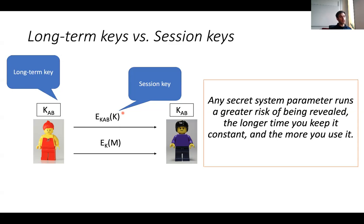This is true both because a constant key gives a higher chance the adversary might break into your machine and learn it, and also because most cryptanalytic attacks benefit from having access to a larger amount of plaintexts and ciphertexts encrypted with the same key.